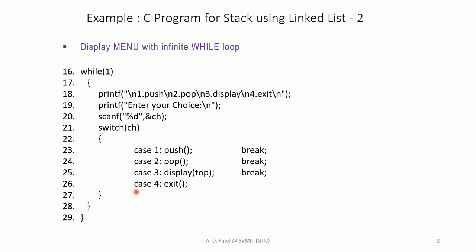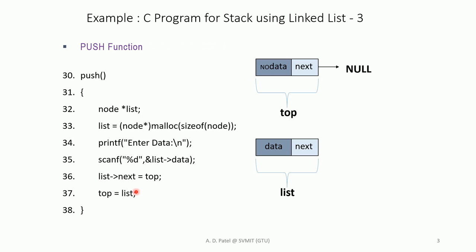In the push function, we already have the global top. We again use node *list and then list = (node*) malloc(sizeof(node)) to allocate memory to list. This is the same process as we did when declaring top.